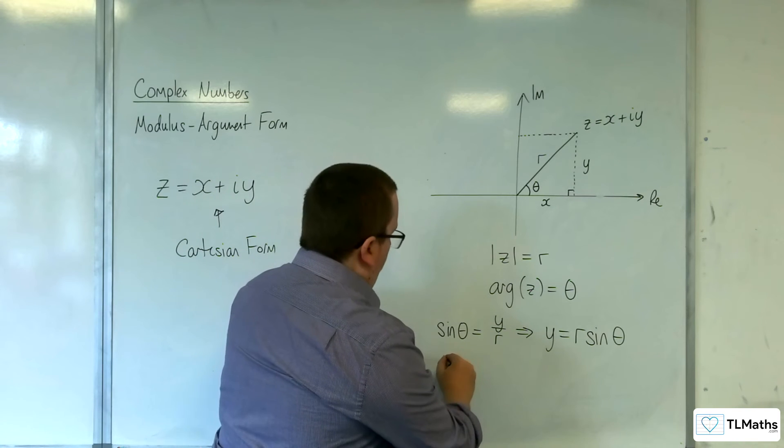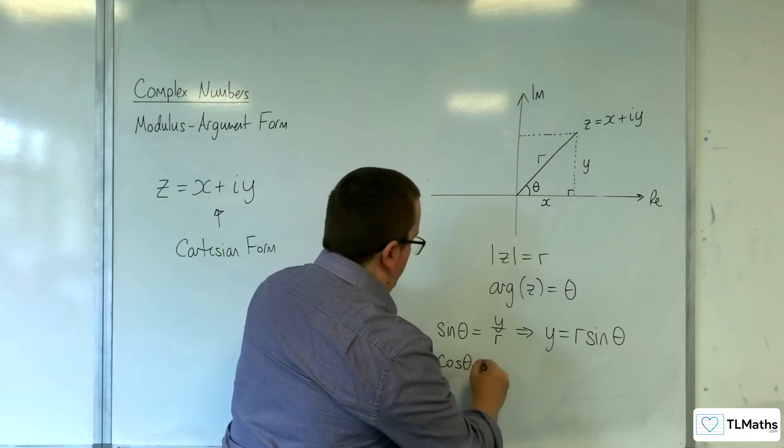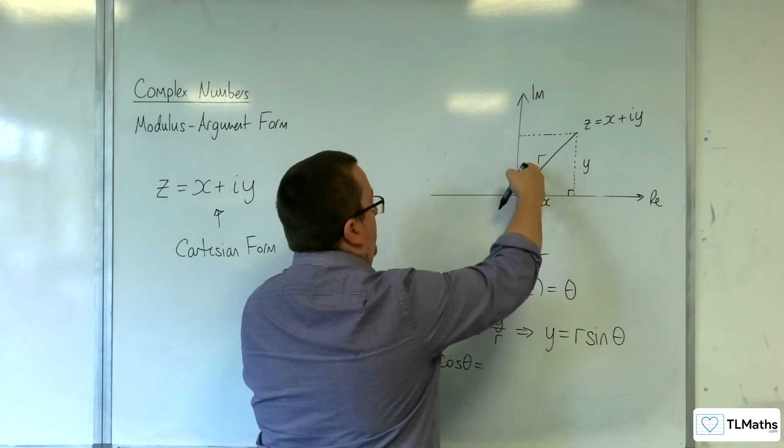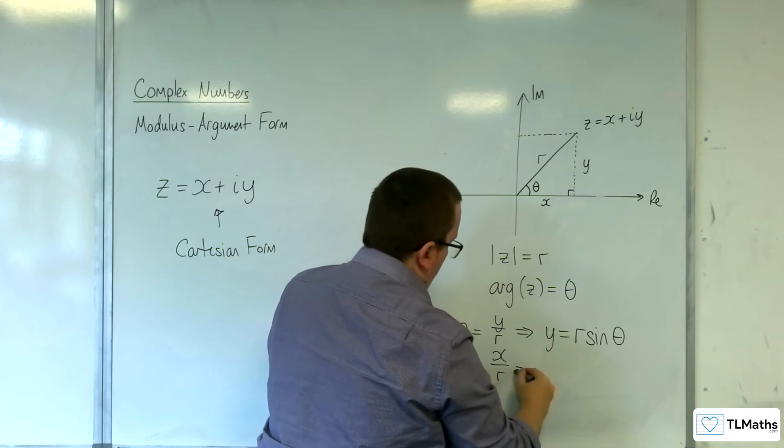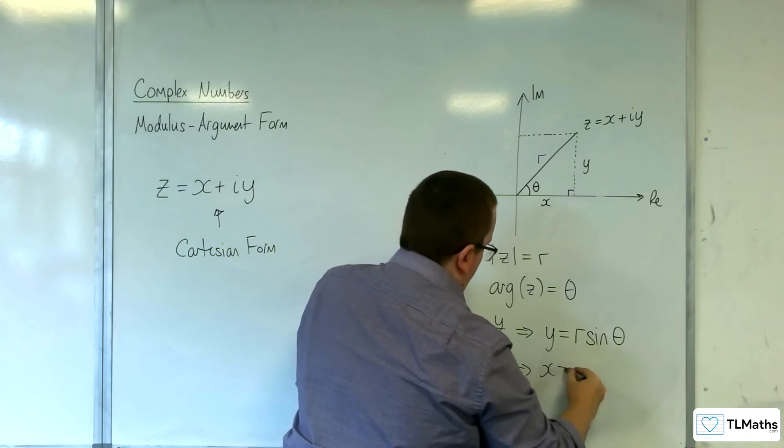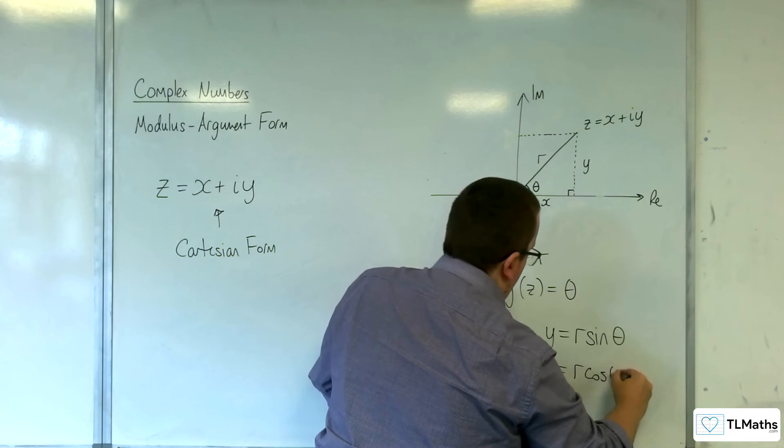Likewise, I could say that cosine theta is the adjacent over the hypotenuse, so X over R. So, X is R cosine theta.